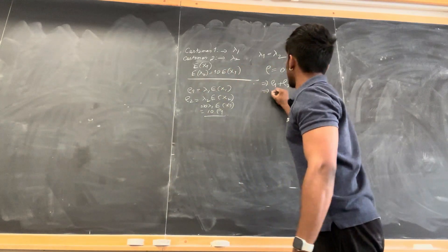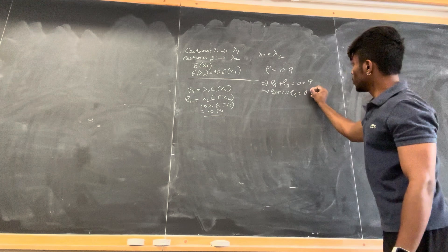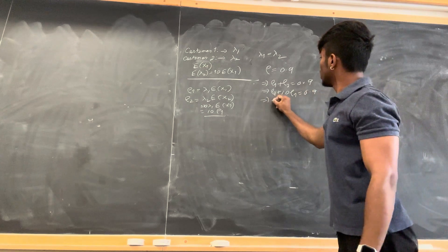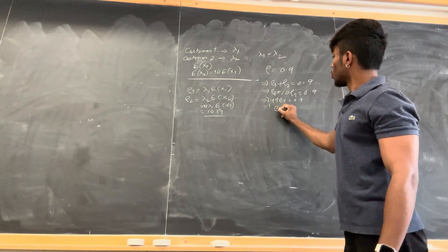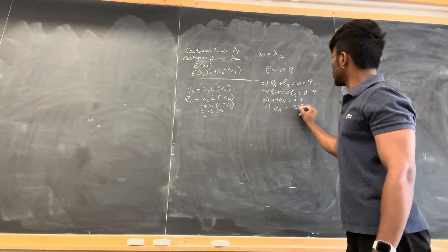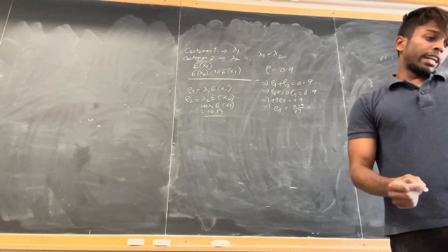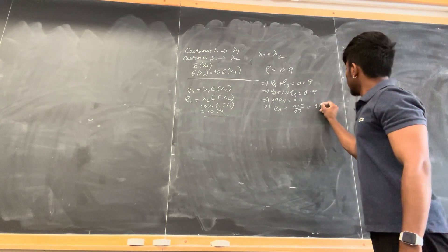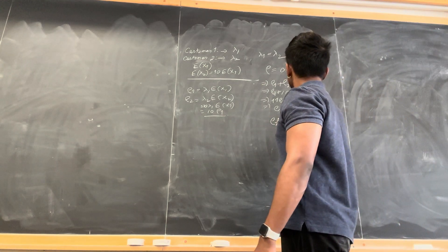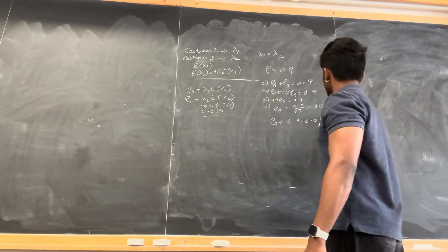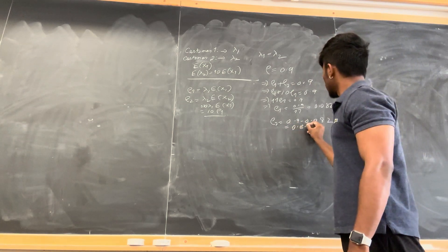So we have ρ_1 + 10·ρ_1 = 0.9, which means 11·ρ_1 = 0.9, so ρ_1 = 0.9/11, which comes out to be 0.082. Then ρ_2 = 0.9 − 0.082 = 0.818.